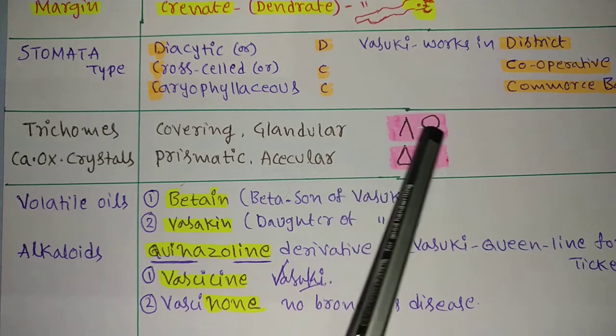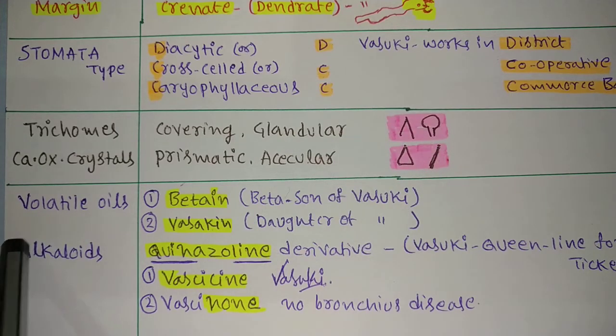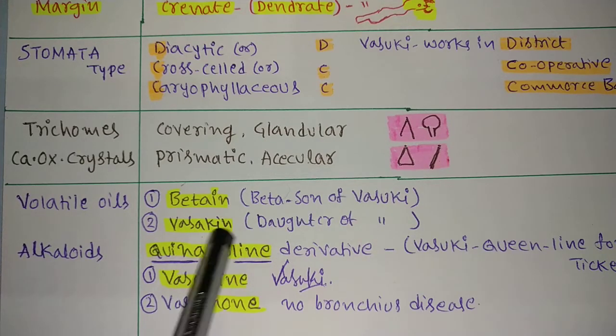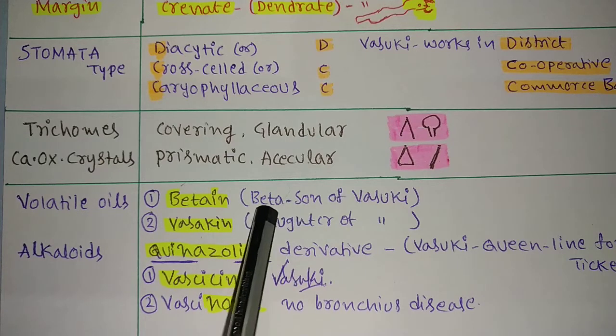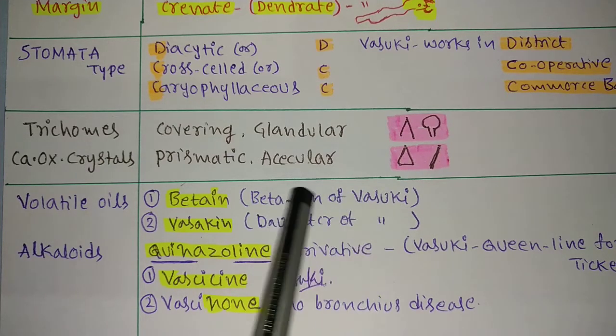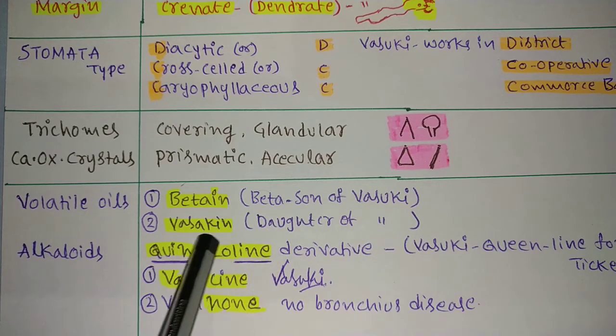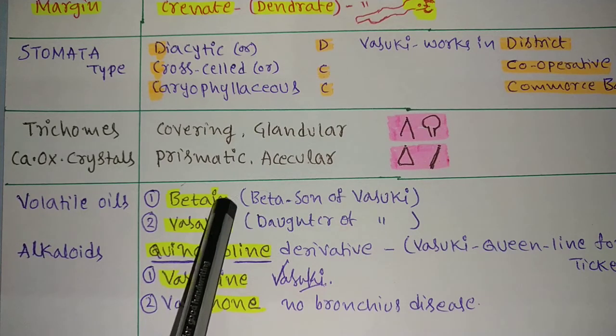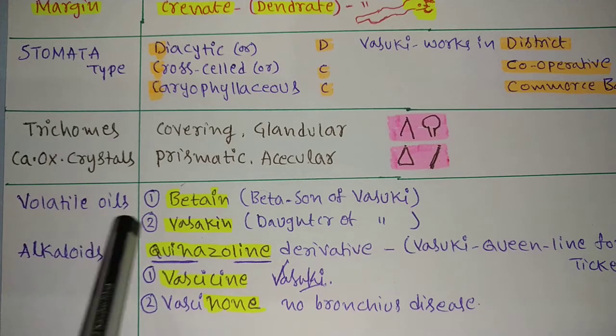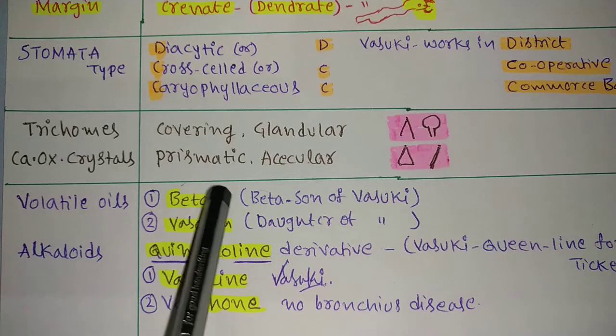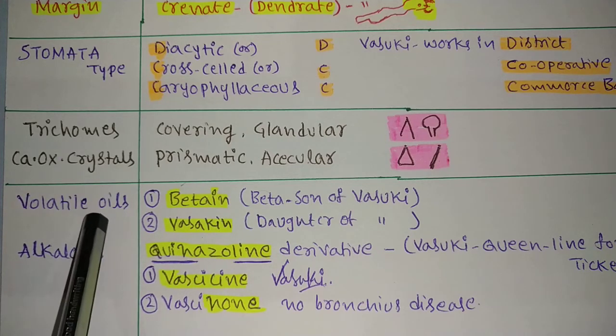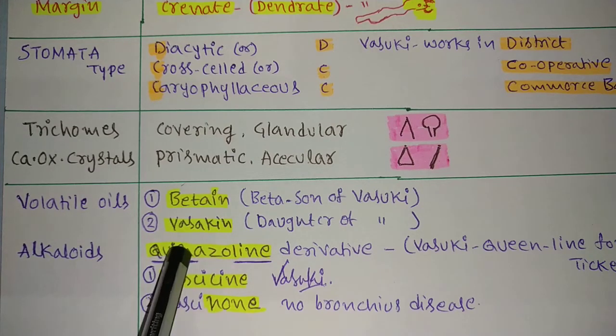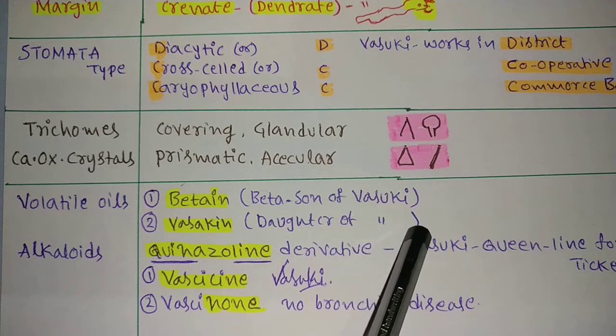Next, it consists of volatile oils. The volatile oil's name is betaine and vasakin. Betaine - beta in Hindi means son. Son of Vasuki. Vasuki consists of one son, Vasuki consists of one daughter. Daughter name is vasakin. Betaine, vasakin - these two you have to remember. In the exam they will ask: what is betaine? Betaine is a volatile oil, not alkaloid. Vasakin is a volatile oil, not alkaloid.